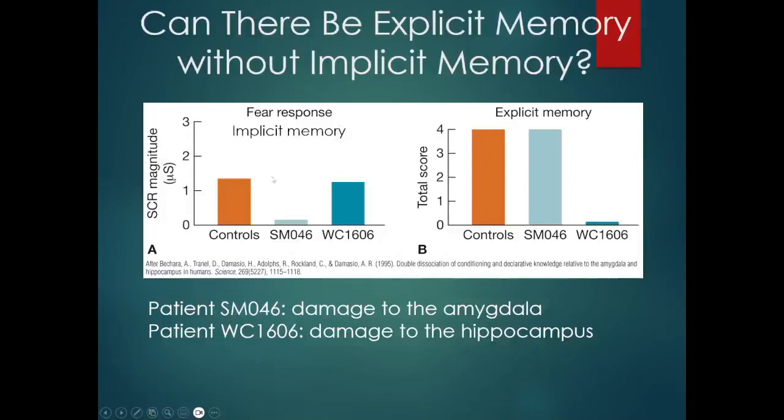In an implicit memory test we're going to measure the fear response by collecting galvanic skin response, and then with the explicit memory we're going to ask them do you remember that. In the fear response, the controls and WC1606 are responding the same way, having the same fear response to that stimulation. In the explicit memory test, SM046 is responding the same as the controls and WC1606 is not. So we're seeing different systems: damage to the amygdala we're having trouble with the emotions, damage the hippocampus we're having trouble with the long-term memory.